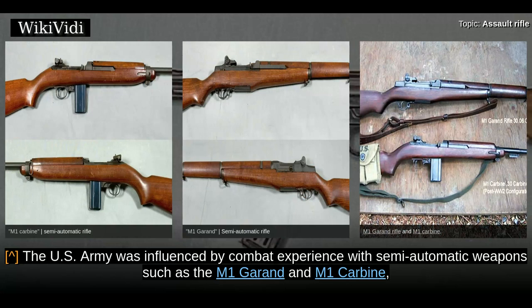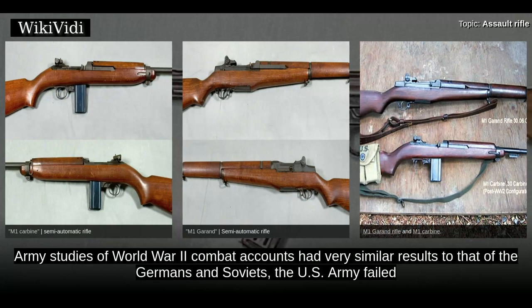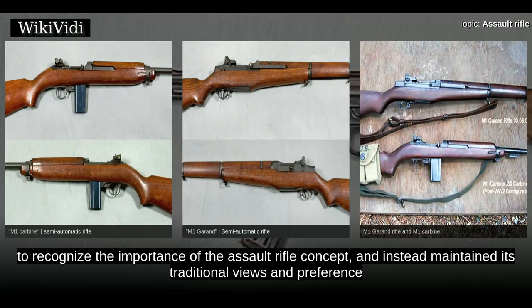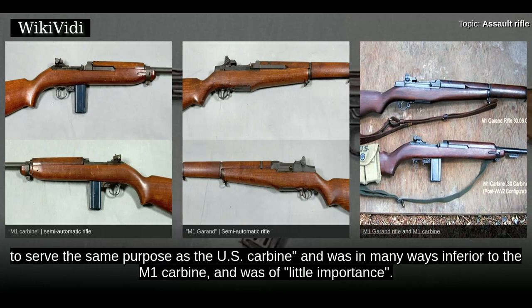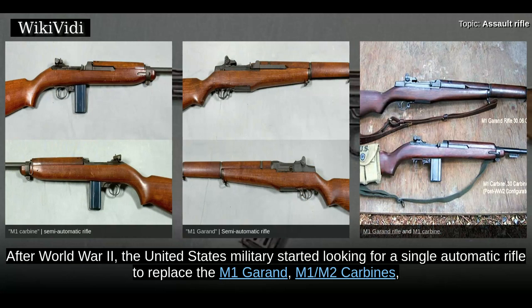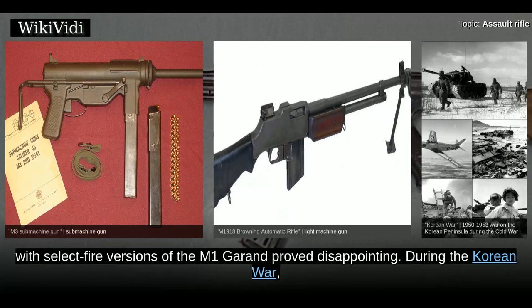Battle Rifles: The US Army was influenced by combat experience with semi-automatic weapons such as the M1 Garand and M1 Carbine, which enjoyed a significant advantage over enemies armed primarily with bolt-action rifles. Although US Army studies of World War II combat accounts had very similar results to that of the Germans and Soviets, the US Army failed to recognize the importance of the assault rifle concept, and instead maintained its traditional views and preference for high-powered semi-automatic rifles. The US Army believed the Sturmgewehr-44 was intended to serve the same purpose as the US Carbine and was in many ways inferior to the M1 Carbine, and was of little importance. After World War II, the United States military started looking for a single automatic rifle to replace the M1 Garand, M1-2 Carbines, M1918 Browning Automatic Rifle, M3 Grease Gun, and Thompson Submachine Gun. Early experiments with select-fire versions of the M1 Garand proved disappointing.